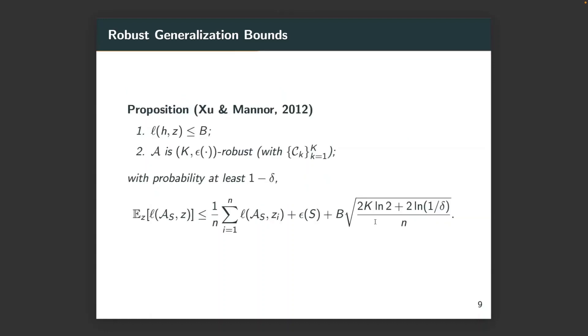To be concrete, by classical result of Xu, if we have the losses bounded by the constant B, and the algorithm is K-epsilon robust, then with probability 1 minus delta, we have the following generalization bound. Here, the epsilon is because we are using those partitions, and the last term contains the number of partitions K, which will be a restriction when K is very large. Later on, we will show how to improve that by taking the sparsity of datasets.